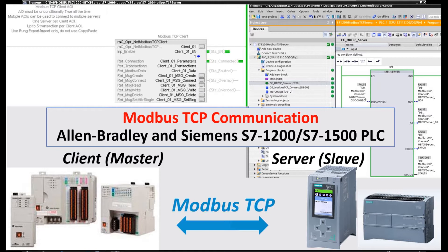Hello everyone. In this video I would like to show a Modbus TCP communication test. I will use the Allen-Bradley Compact Logics running as a Modbus TCP client, and from the Siemens side I will use the S7-1200 controller running as a Modbus TCP server. I mainly focus on the test to show Allen-Bradley and Siemens can use Modbus TCP — Siemens side runs as a server, Allen-Bradley side runs as a client.